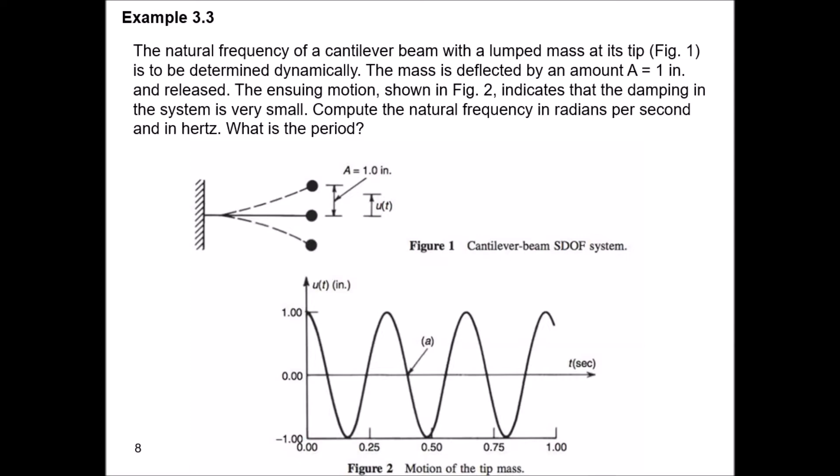Let's take a look at example problem 3.3: the natural frequency of a cantilever beam with a lumped mass at its tip can be determined dynamically. The mass is deflected by an amount a equal to one inch and released. The ensuing motion shown in the plot indicates that damping in the system is very small — that's an assumption we'll make. They want us to compute the natural frequency in radians per second.